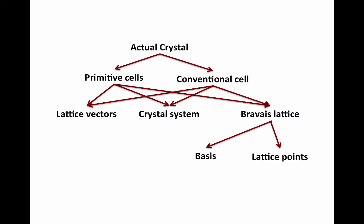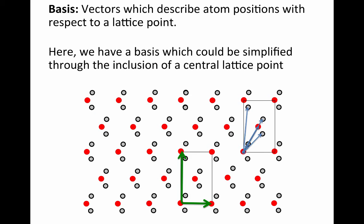Okay, I think at this point we've got to talk about the basis. So the basis is a set of vectors which describe the atom positions with respect to a lattice point. Let's take the rectangle case we've had floating throughout this video. We could use these blue arrows on the right to denote the basis. But we could simplify the situation through the inclusion of a lattice point at the center of the rectangle.